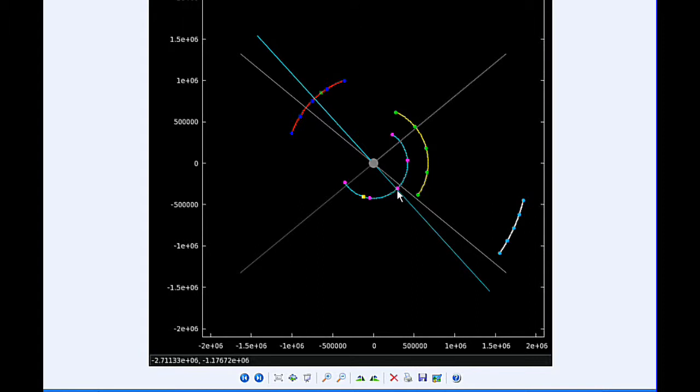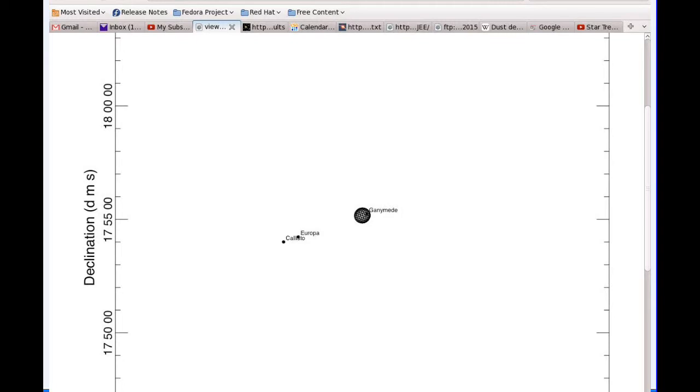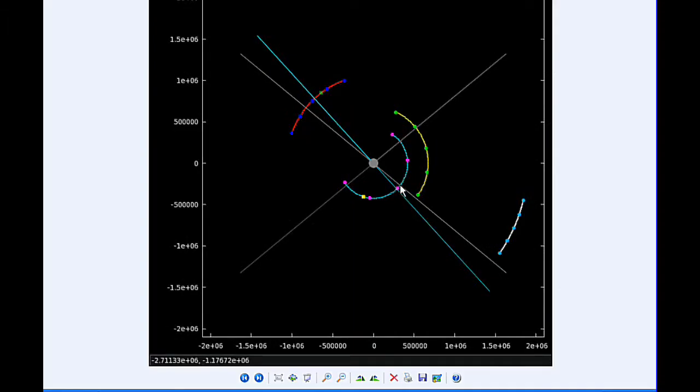At 12 hours UTC, Io is still moving behind Jupiter, going into Quadrant 1 heading east, and Ganymede is now transiting, going into Quadrant 3 heading west.